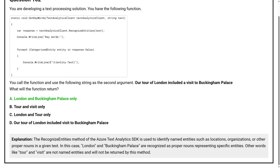The Recognize Entities method of the Azure Text Analytics SDK is used to identify named entities such as locations, organizations, or other proper nouns in a given text. In this case, London and Buckingham Palace are recognized as proper nouns representing specific entities. Other words like tour and visit are not named entities and will not be returned by this method.